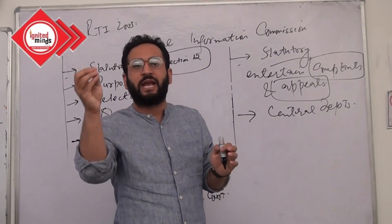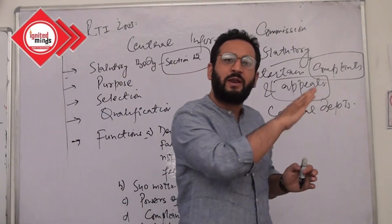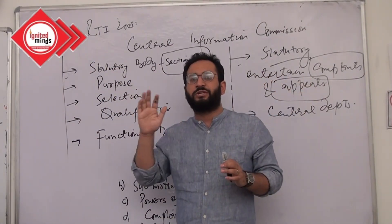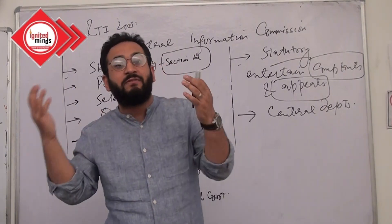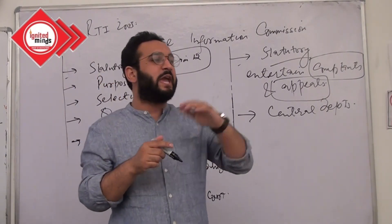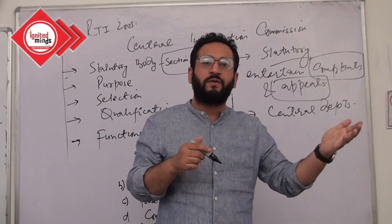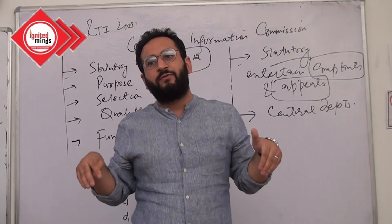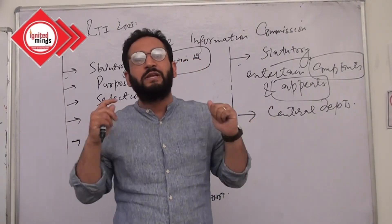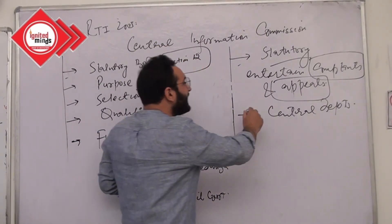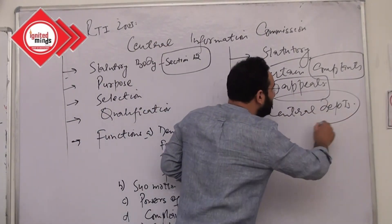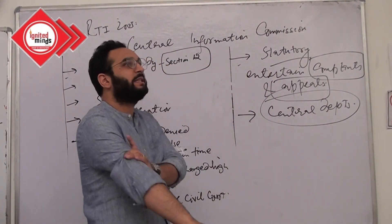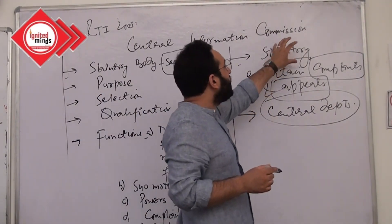Similarly, complaints or appeals related to defence departments, Prasar Bharati, All India Radio, Doordarshan, communication, Indian Railways offices, Airport Authority of India — all these fall under the Union List. So if you have any complaint related to a central department, in that matter the RTI will be governed by the CIC.